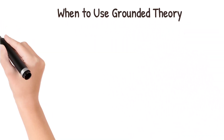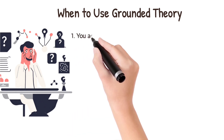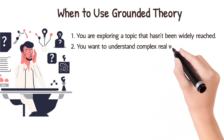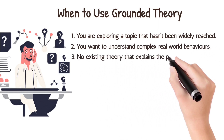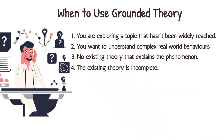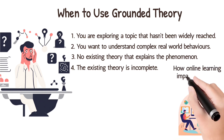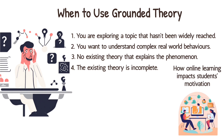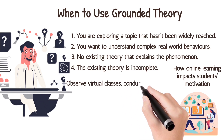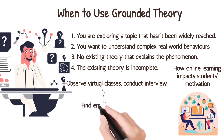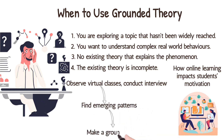So when should you use grounded theory? Grounded theory is ideal when you're exploring a topic that hasn't been widely researched, you want to understand complex real-world behaviors, or there's no existing theory that explains the phenomenon, or the existing theory is incomplete. For example, imagine you're a researcher studying how online learning affects student motivation. Since this is a relatively new area with not much existing research, grounded theory would be a great choice. You start by collecting data, interviewing students and teachers, and observing virtual classrooms. You don't begin with any assumptions — you start finding emerging patterns and let the data tell the story to make a grounded theory.